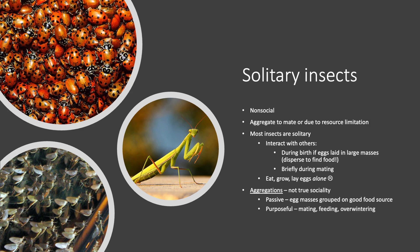Most insects are actually solitary. They interact with others only during birth if eggs are laid in large masses — they'll disperse quickly — and then again during mating, but they eat, grow, and lay their eggs alone. Aggregations are not truly sociality. When you see a group of insects, it's often just passive interaction: egg masses grouped on a good food source, or gathering for mating, feeding, or overwintering purposes.